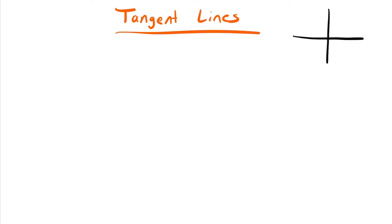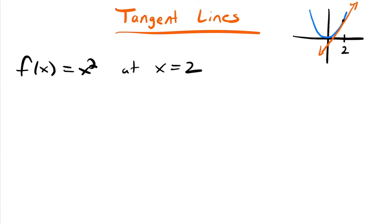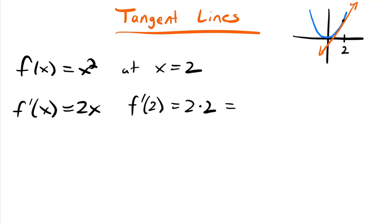If we bring back our function x squared, at x equals 2 our point on the function is right here, and the slope is 4. That is actually the slope of a tangent line at that point — the straight line that just barely touches the function at x equals 2 has a slope of 4. So we can find the equation of this tangent line using our derivative and some algebra. To find the equation of the tangent line at x equals 2, we already found that f prime of x equals 2x, and f prime of 2 equals 4. So our slope m equals 4.